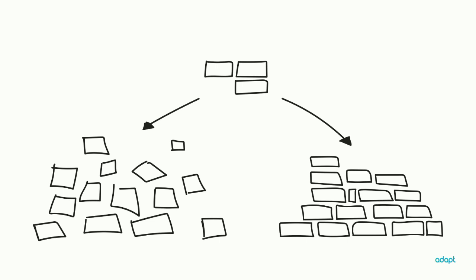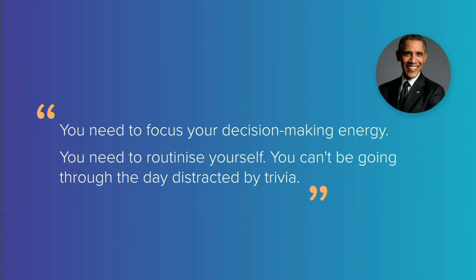When you have a structure that gives you the opportunities to navigate your different choices and map them out, you can also prioritize what you focus on. To quote someone who has a lot of decisions to make every day: he only has a blue and gray suit because he doesn't want to spend time deciding what to wear every day. You need to focus your decision-making energy. You need to routinize yourself — you can't go through the day distracted by trivia. To implement that in your work, you need some structure.